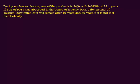During a nuclear explosion, one of the products is strontium-90, with a half-life of 28.1 years. Let's convert the half-life into a rate constant. We know the relation between rate constant and half-life is given by k = 0.693 divided by t-half. We can plug in the value: 0.693 divided by 28.1 years.